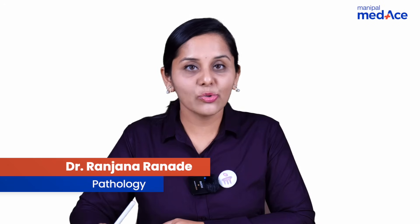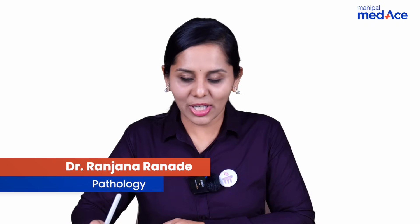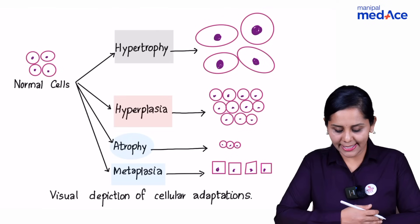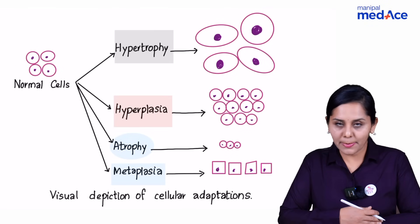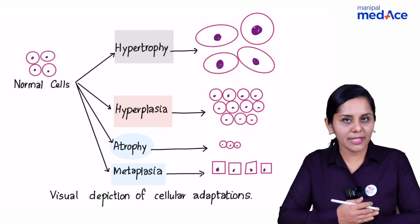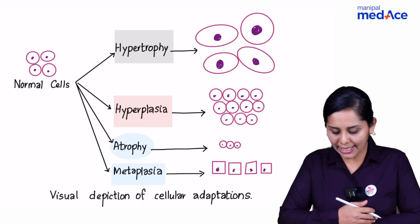Hello, my dear students. When you can't adjust to a situation, change is the rule, and that happens even to the cells in the form of hypertrophy, hyperplasia, atrophy, and metaplasia, which are different cellular adaptation mechanisms.